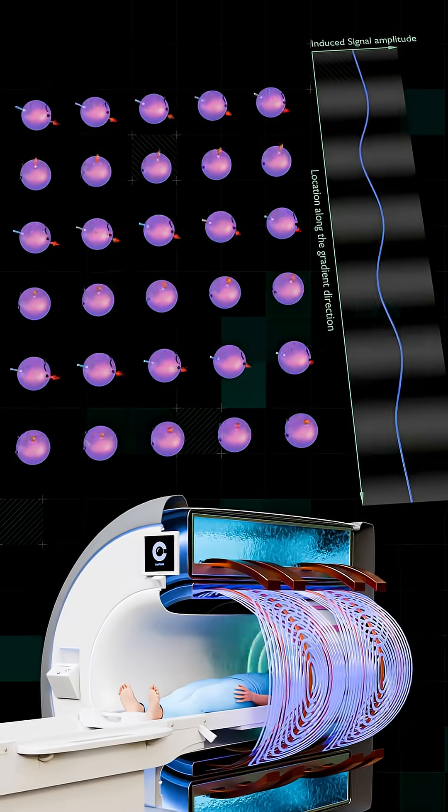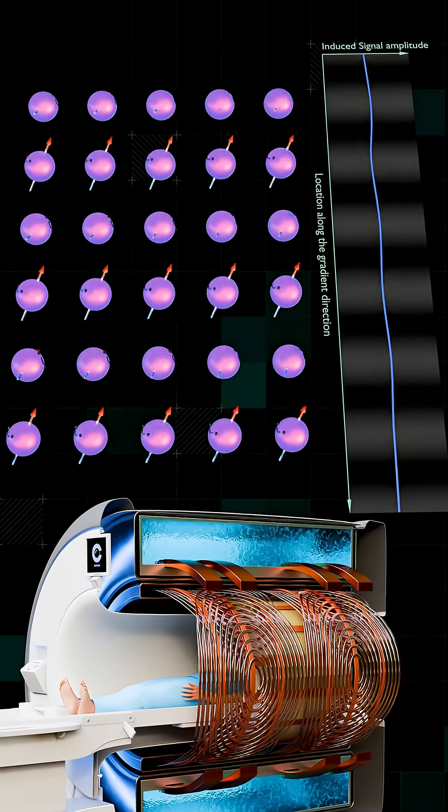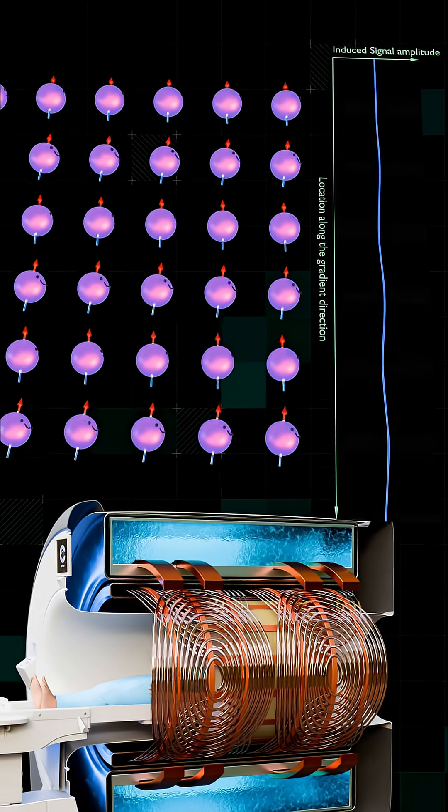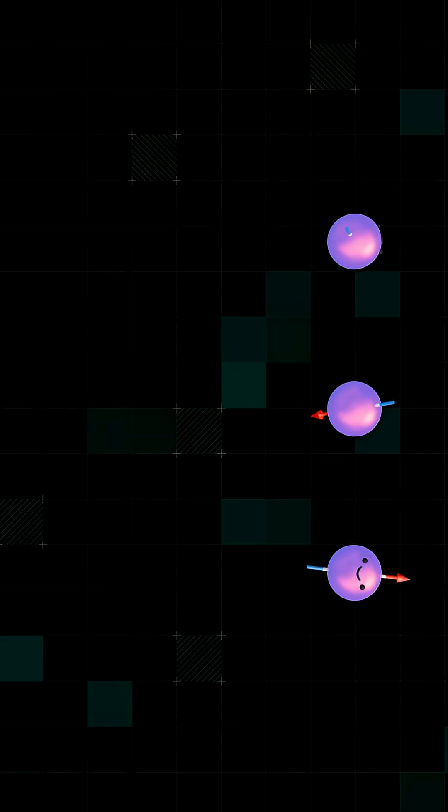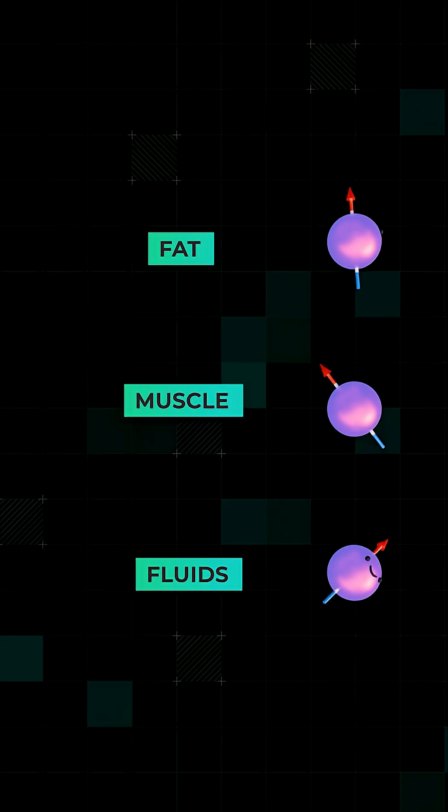After the RF and gradient coils are turned off, the spins gradually lose sync and drift back to their original alignment along the main field. This recovery happens at different speeds in different tissues in the body that make fat, muscle, and fluids distinguishable.